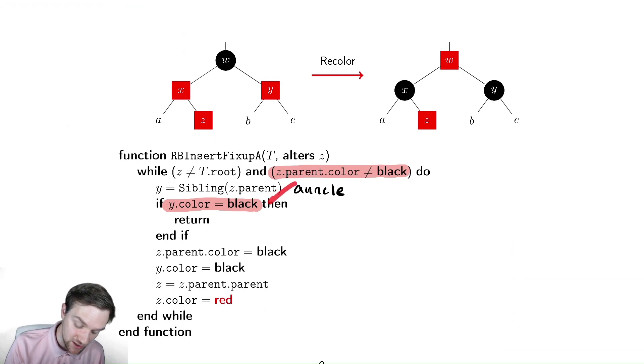So if we are in the correct situation, then we set the parent to be black, and the uncle to be black, and then we move up to the grandparent, and set the grandparent to be red. Exactly what we said. We recolor the parent and our uncle, and then we move up to the grandparent. And we keep doing this until we have not broken it too bad.